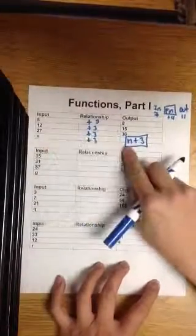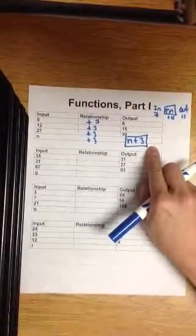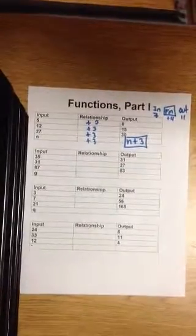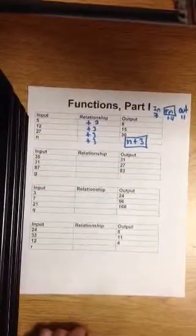So for example, if I have a 10 as a number, add 3, the answer will become 13. That's the output. So plus 3. N plus 3 is the function rule. Next one.